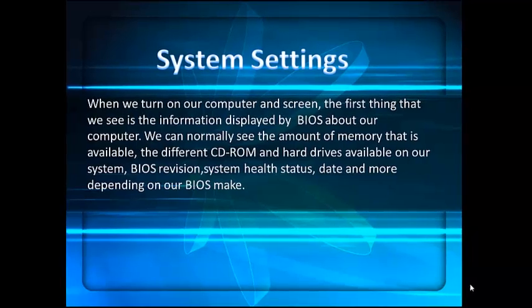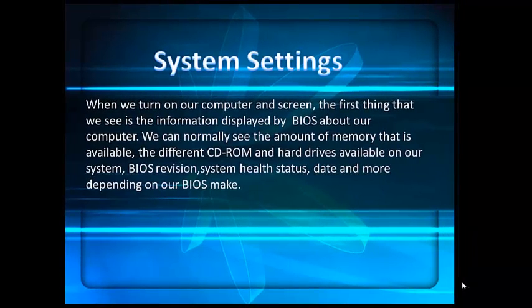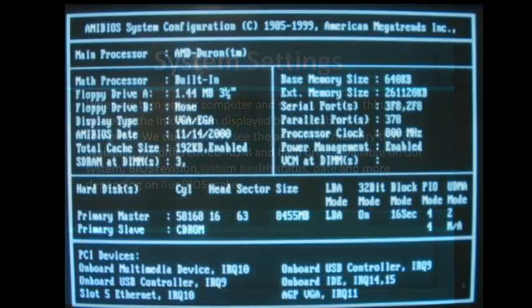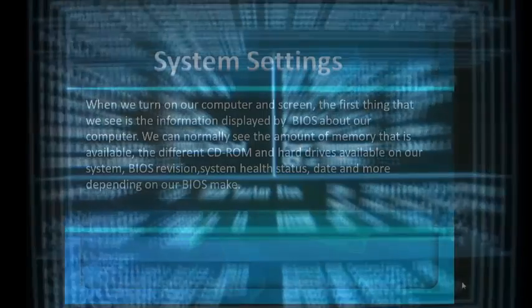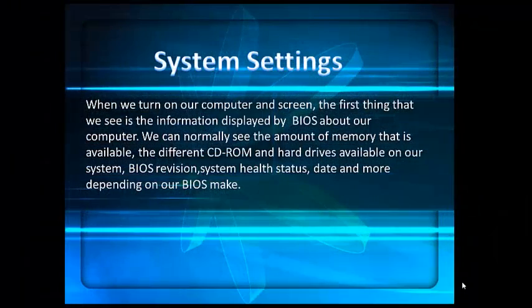System settings: when we turn on our computer, the first thing we see is information displayed by BIOS about our computer. We can normally see the amount of memory available, the different CD-ROM and hardware available on our system, BIOS revision, system health status, date, and more depending on our BIOS maker.